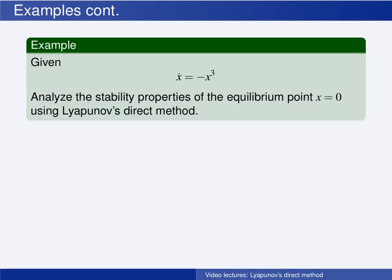Let us consider the example which we looked at when learning Lyapunov's indirect method, the linearization method. We consider the system x_dot equals ax minus x raised to the 3rd power, where we only knew that a was a constant but not its value or its sign.